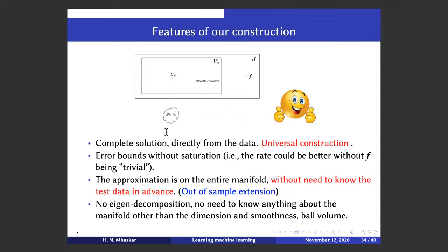To summarize: we have a complete solution of the problem directly from the data. The construction is completely universal — it assumes nothing about the function. The error bounds don't have saturation, so the rates obtained could be artifacts of the proof and could potentially be improved. The approximation is on the entire manifold, so we don't need to know the entire test data in advance — we have automatically done an out-of-sample extension. We don't use any eigendecomposition, don't need to know anything about the manifold, and are not even trying to approximate it. All we need is the dimension and smoothness.